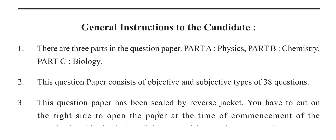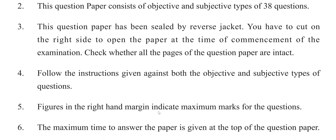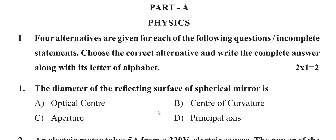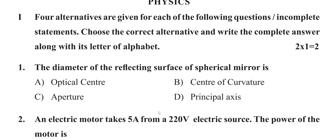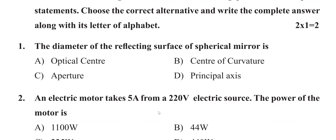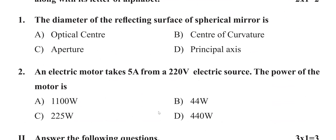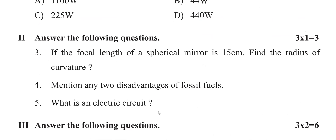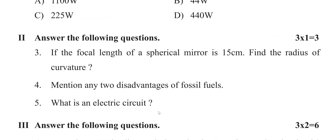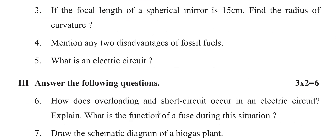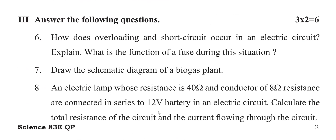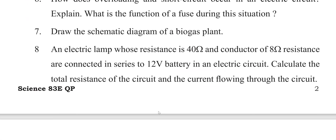In this session, I am going to give you the complete information about the model question paper subject science. This is Part A, physics paper. As you can see, there are two multiple choice questions. Next, second main: answer the following questions, each carries one mark, total three questions. Third main: each carries two marks, total three questions — it carries six marks.